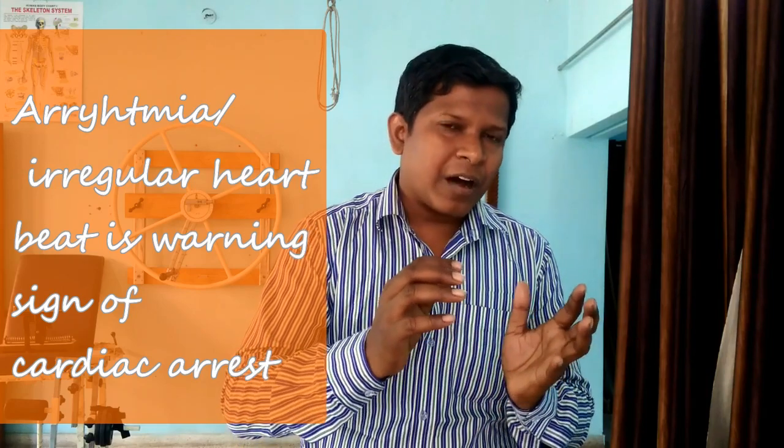Now coming to heart attack — we also call it heart failure. In a heart attack, the blood supply to the heart is blocked. The heart is still pumping, it is still beating, but the blood supply to the heart muscle is blocked. This is the main difference between cardiac arrest and heart attack: in cardiac arrest the heart stops beating, while in heart attack the heart is still pumping but the blood supply to the muscles is blocked.